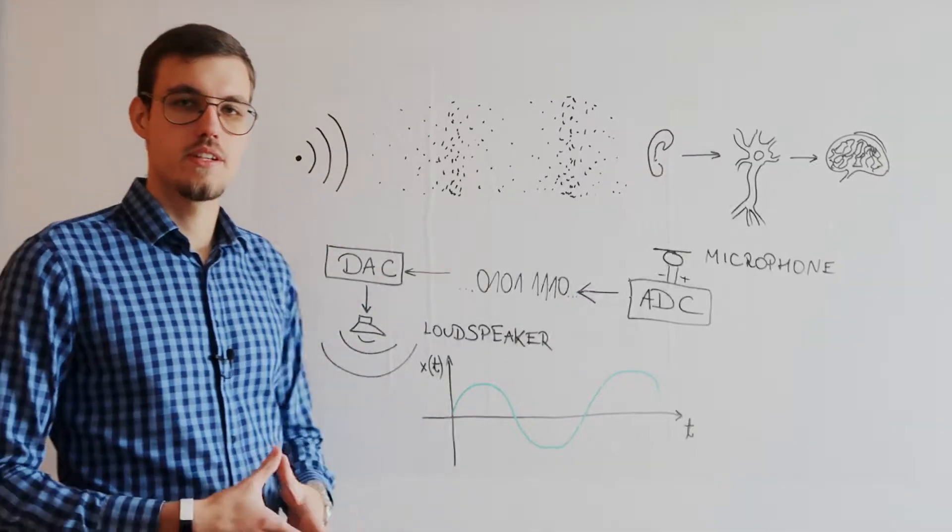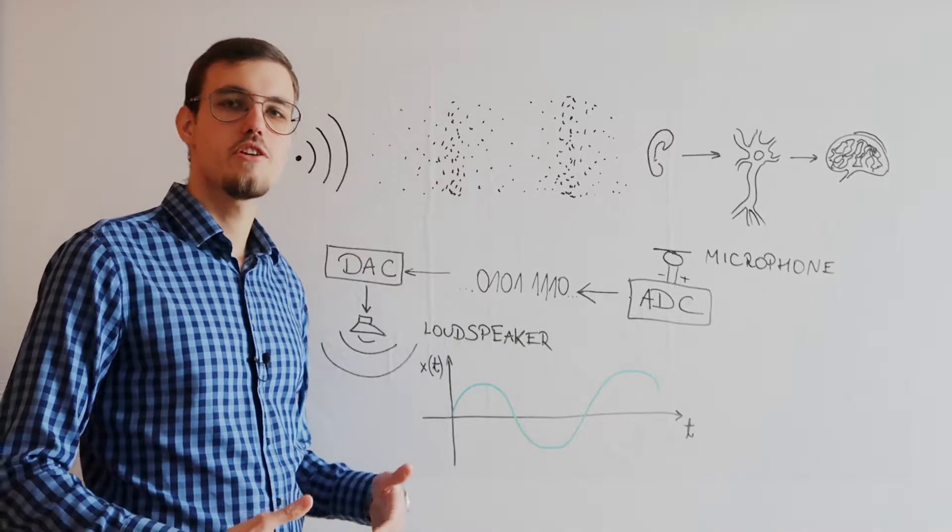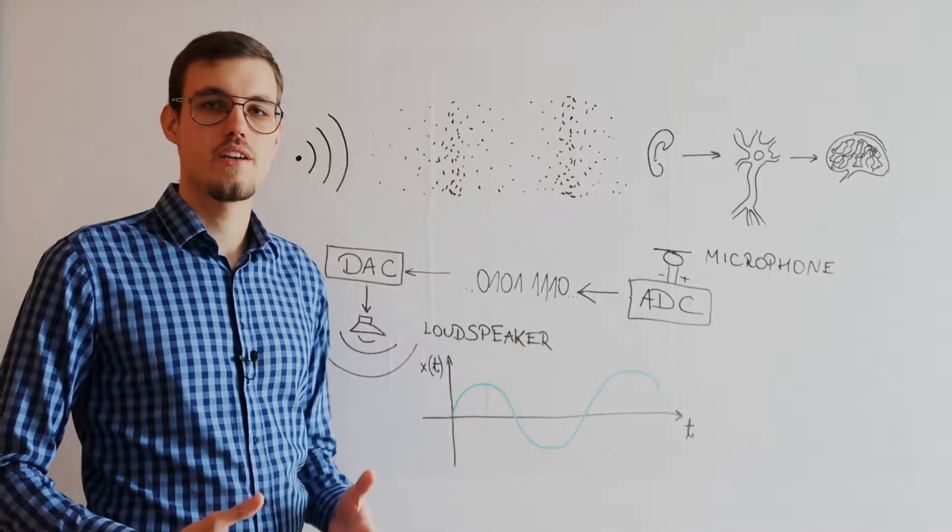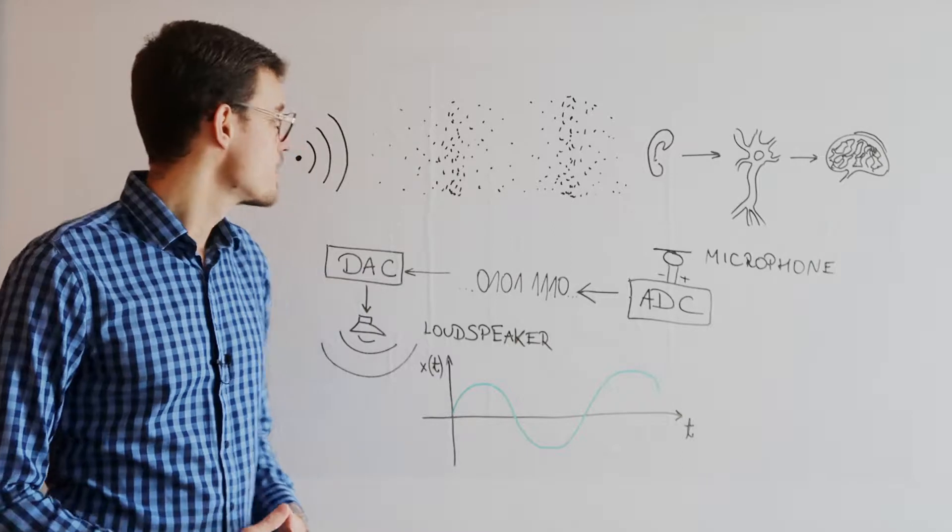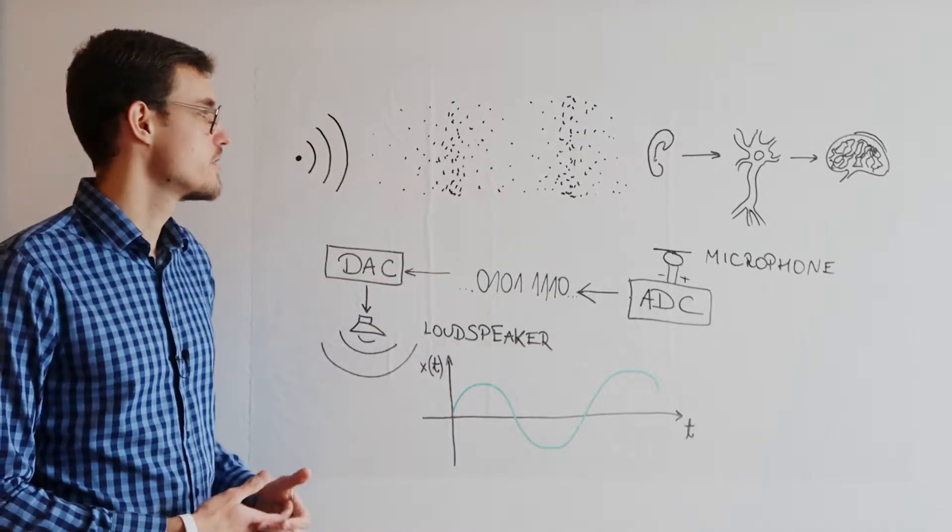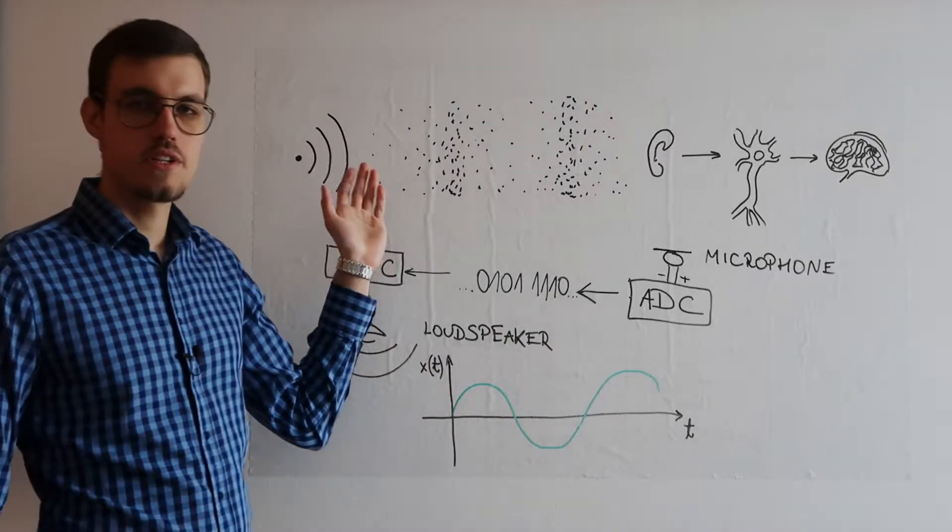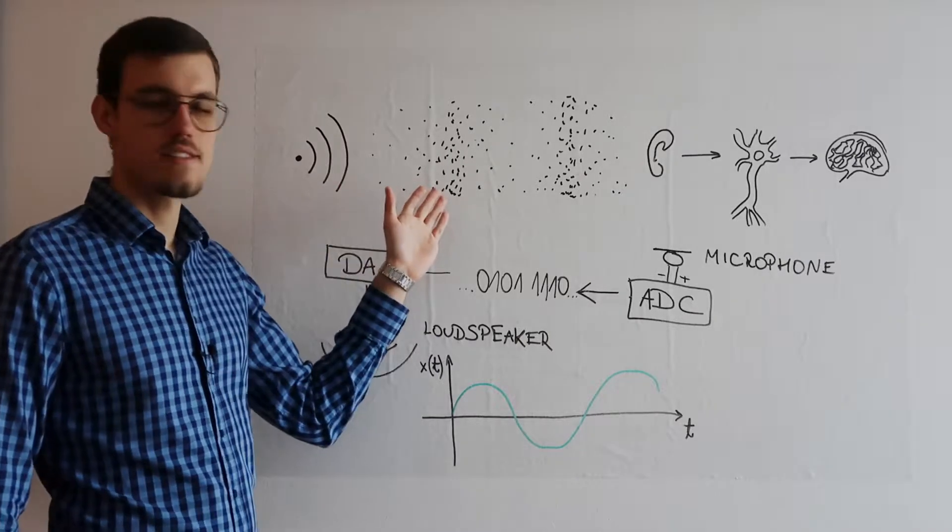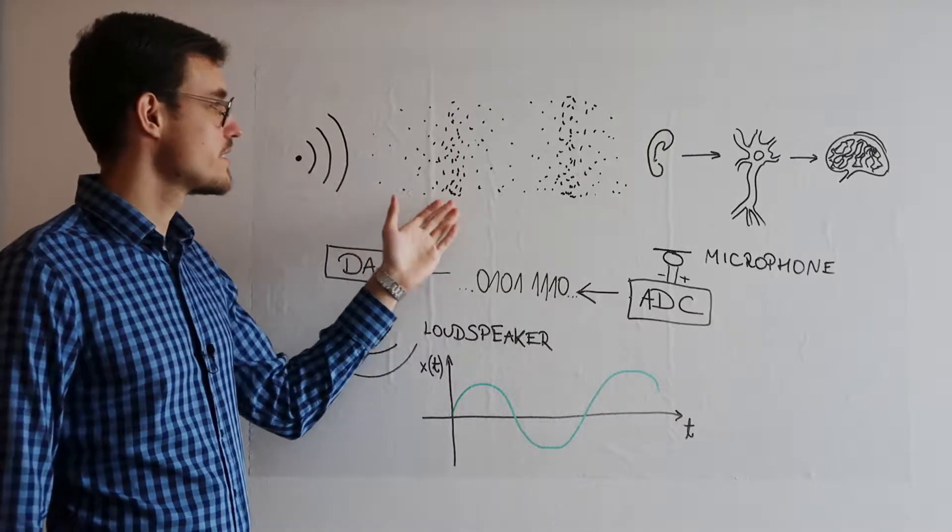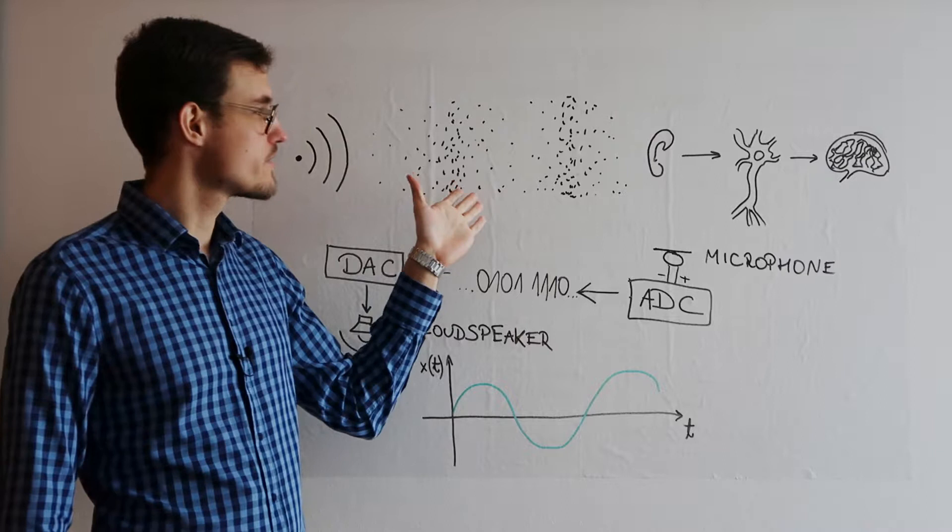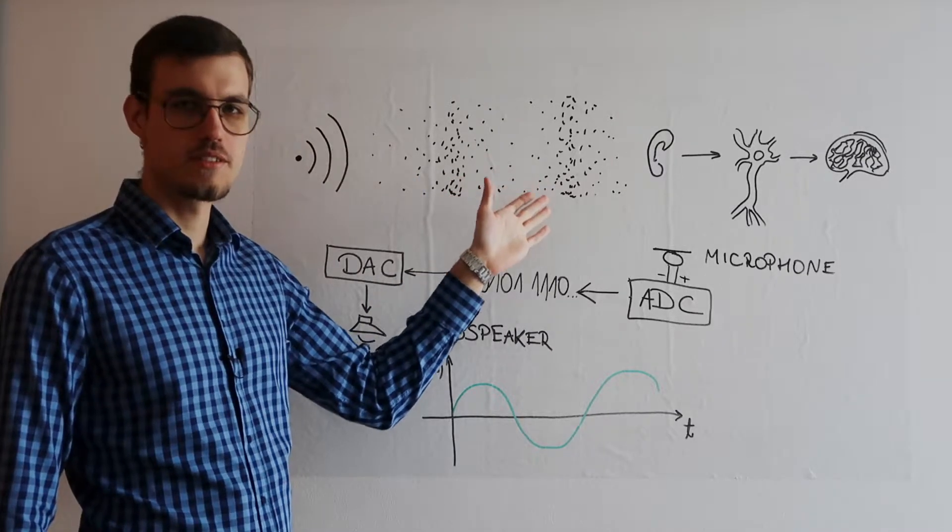That way the vocal cords vibrate and cause the air surrounding them to move as well. The particles that are being moved in turn move other particles and in this way a wave propagates. If you look at this picture, the particles that were initially moved hit against other particles that are then transferred further and hit other particles and so on.